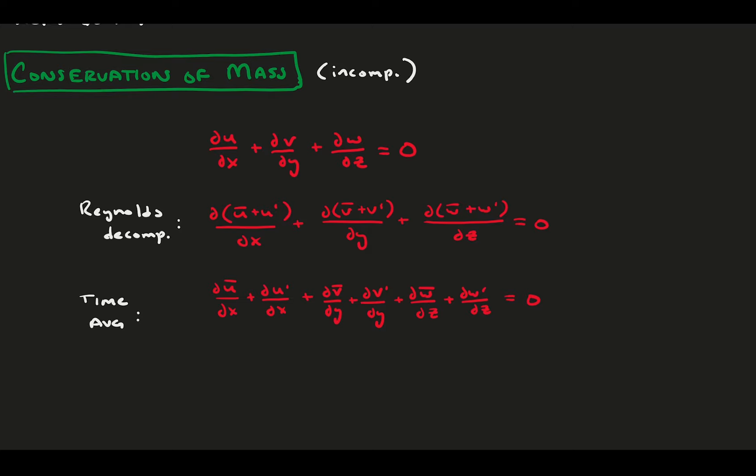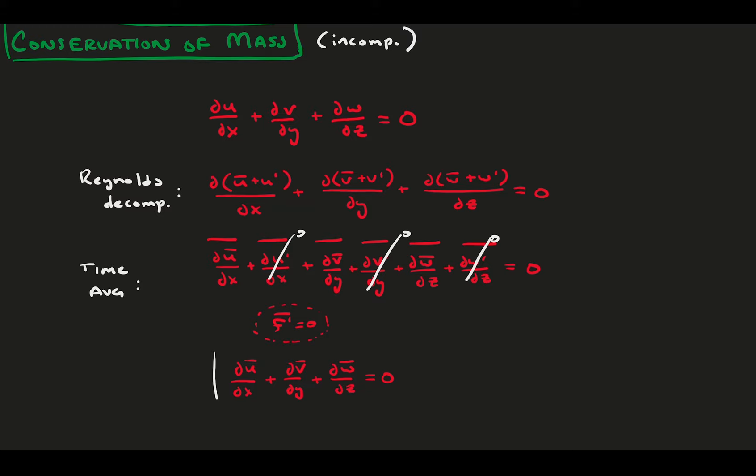Use our averaging rules to remove some terms, and we get a new equation for the means. Using this equation, we can put it back in the original equation to get a separate equation that talks about the fluctuations. So, two equations of conservation of mass, and we're done. On to the conservation of momentum.